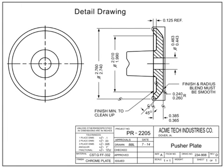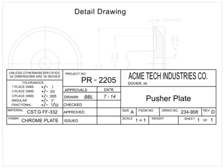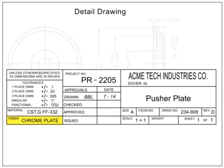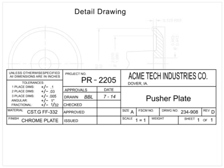Machine drawings are detail drawings that require machining to create the end product. They can be developed using a cast part as the original material. In this drawing, the casting from the last example was used as the starting material. This machining drawing will remove material from the original casting and add the finishes required to produce a final product with its own unique part number. Only the dimensions necessary to convert the original cast part into the new part are required; the casting dimensions are not shown.